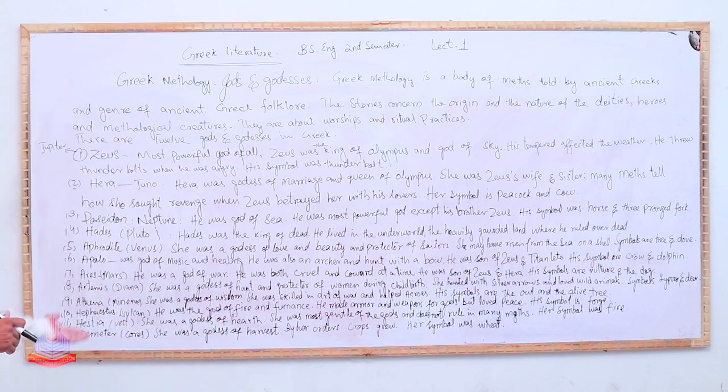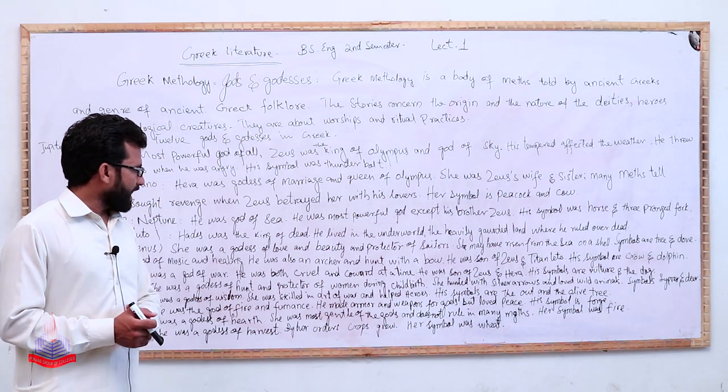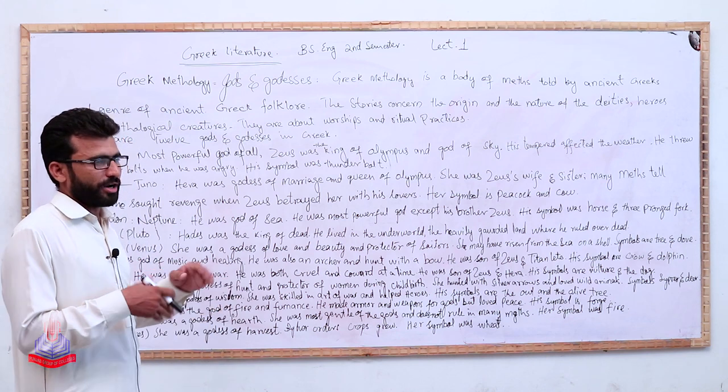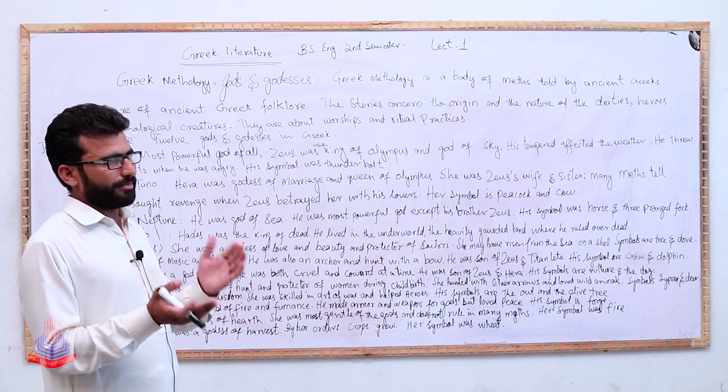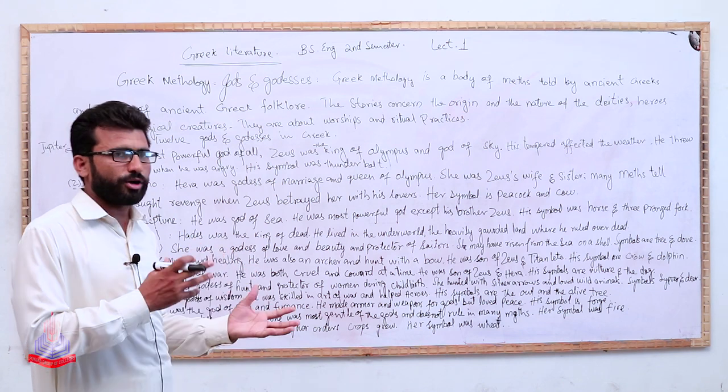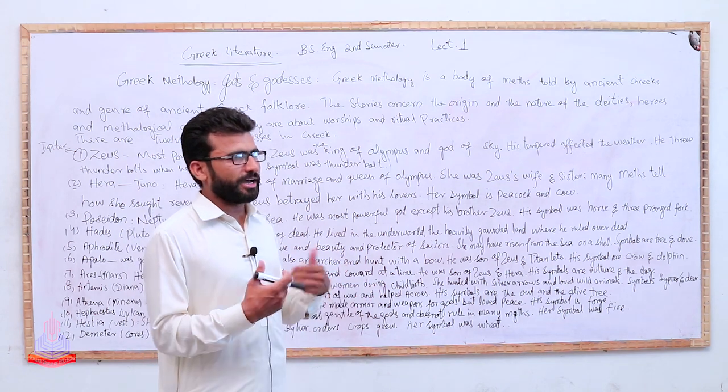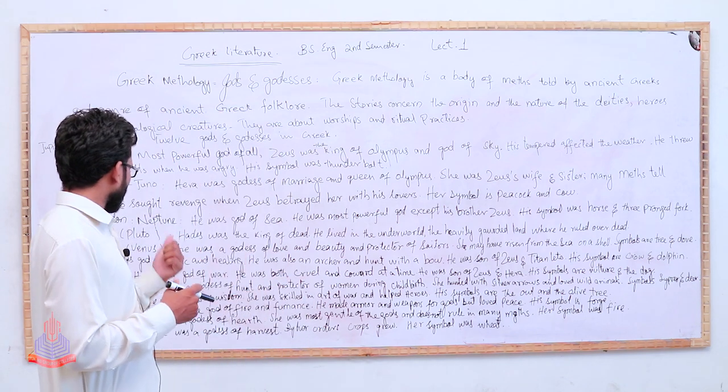Hephaestus. Vulcan they call it in Roman. He was the god of fire and furnace. Fire and furnace mean to say the fire and the furnace in which iron is heated and melted, from which armor or weapons were prepared. He was god of that.